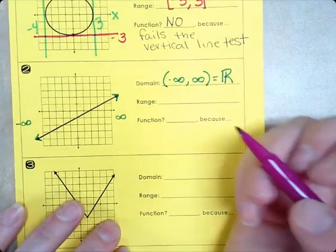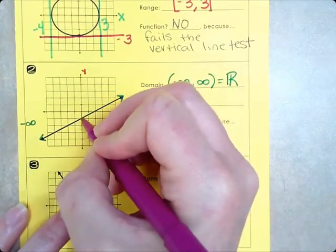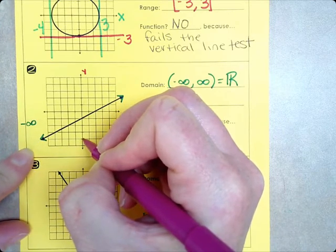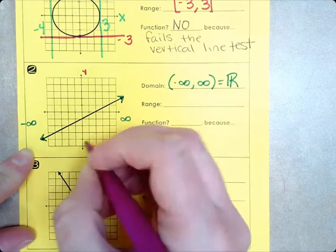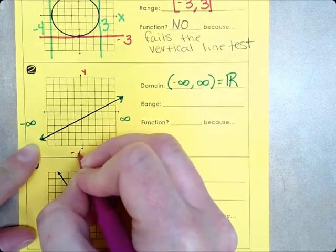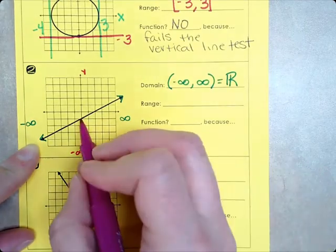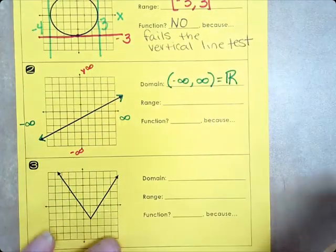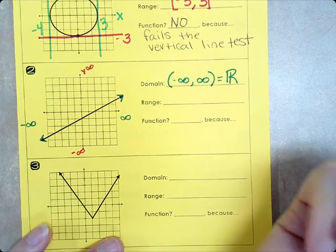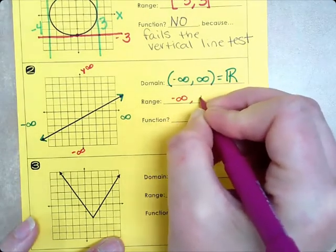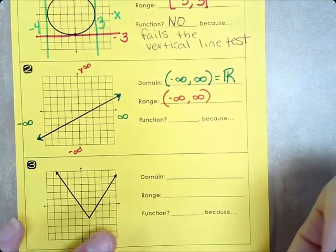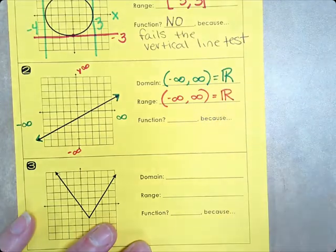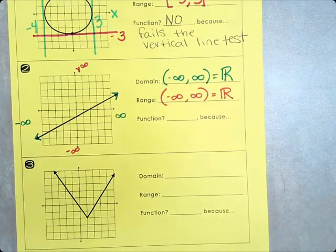Range is our y, so we go on the y-axis. How far down will it go? Can we put a fence on that? This is going to continue to go down forever and ever. Negative infinity. And then this arrow, we can't put a fence here either, so it's positive infinity. So, negative infinity to positive infinity. Parentheses go around infinities. This is all real numbers. Anytime it's infinity, negative infinity, positive infinity, it's all real numbers.